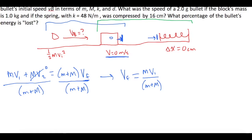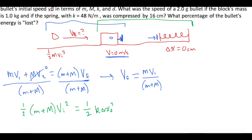We will use conservation of energy for this part. We have the kinetic energy of the block and bullet together sliding on the table. There's no spring potential energy initially, so one-half times (m + M) times v initial squared equals one-half k delta x squared. When the block and bullet compress the spring, their final velocity will be zero, and at that point all energy is spring potential energy.